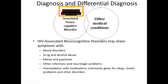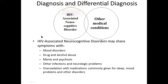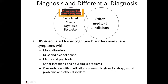Diagnosis and differential diagnosis: HIV associated neurocognitive disorder is a diagnosis of exclusion — we must exclude many other things before confirming HAND. There is significant overlap with other medical conditions. HIV associated neurocognitive disorders may share symptoms with mood disorders, drug and alcohol abuse, mania, psychosis or depression, other infections and neurological problems, or over-sedation with medications commonly given for sleep, mood problems, and other disorders.